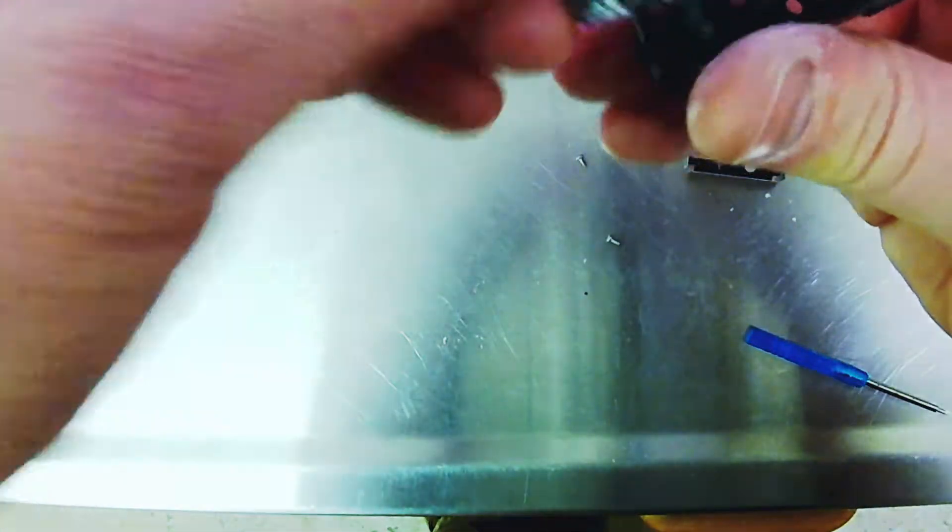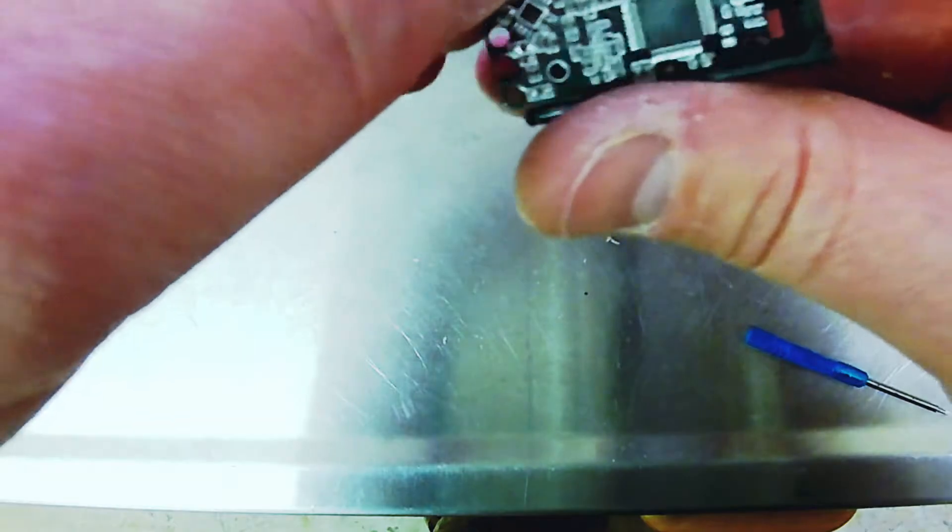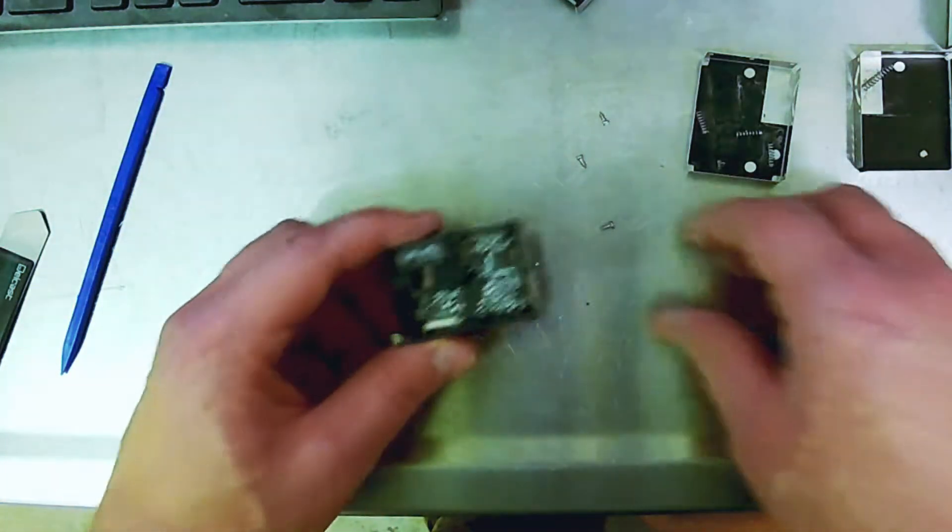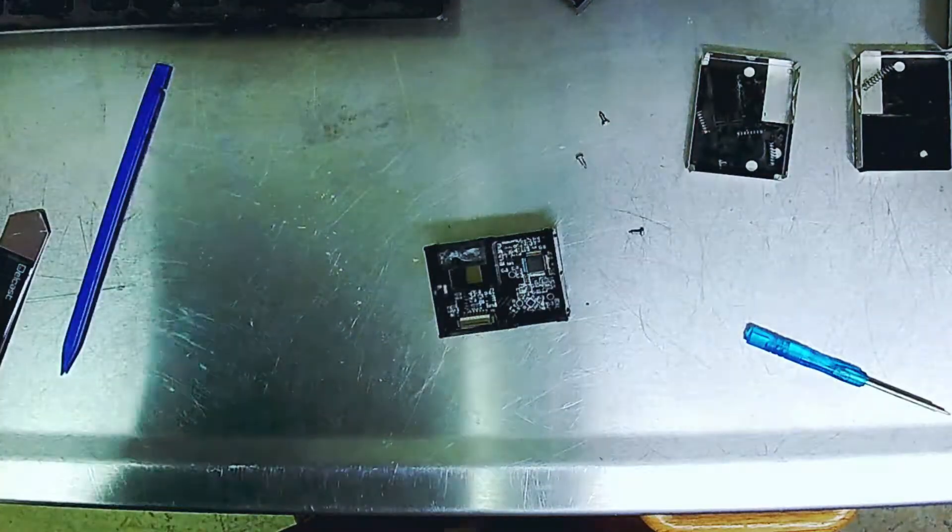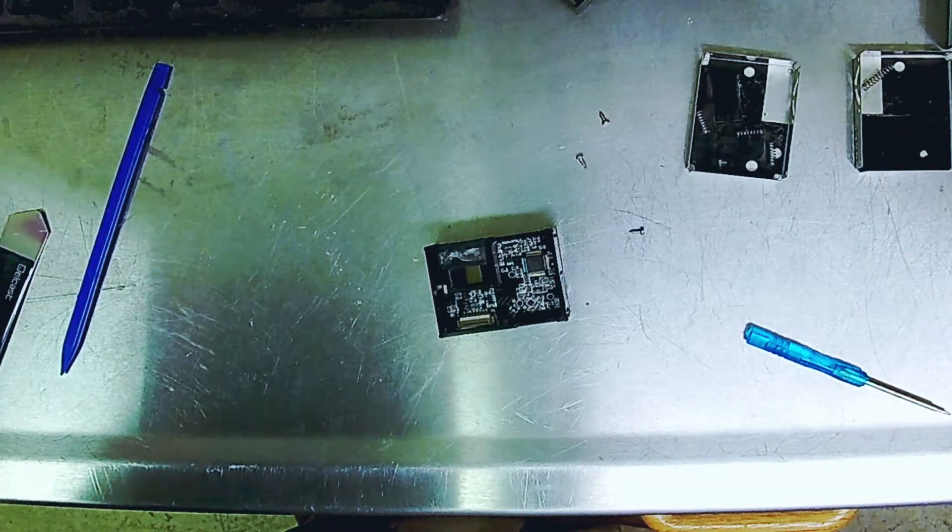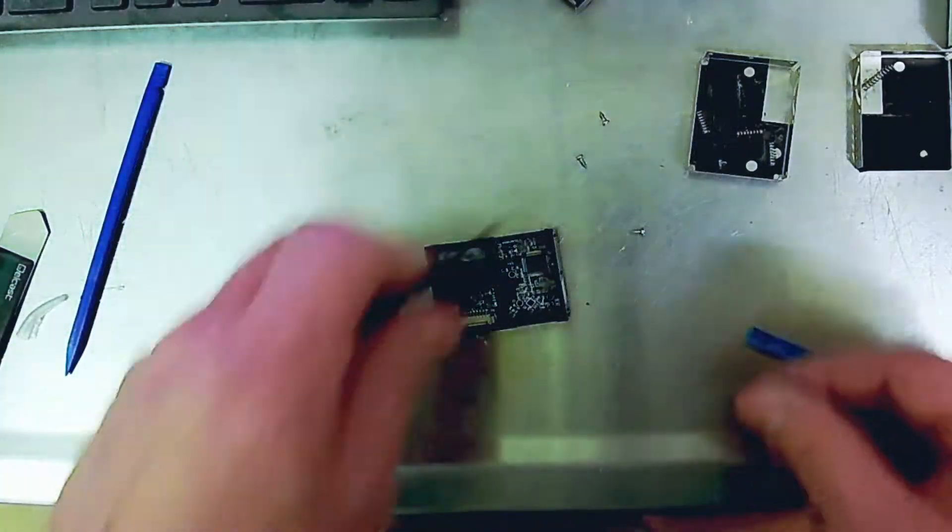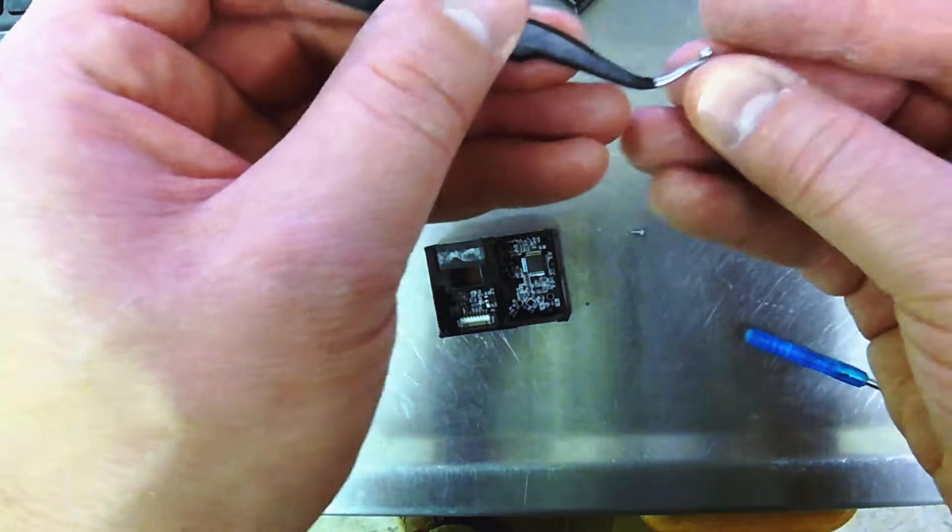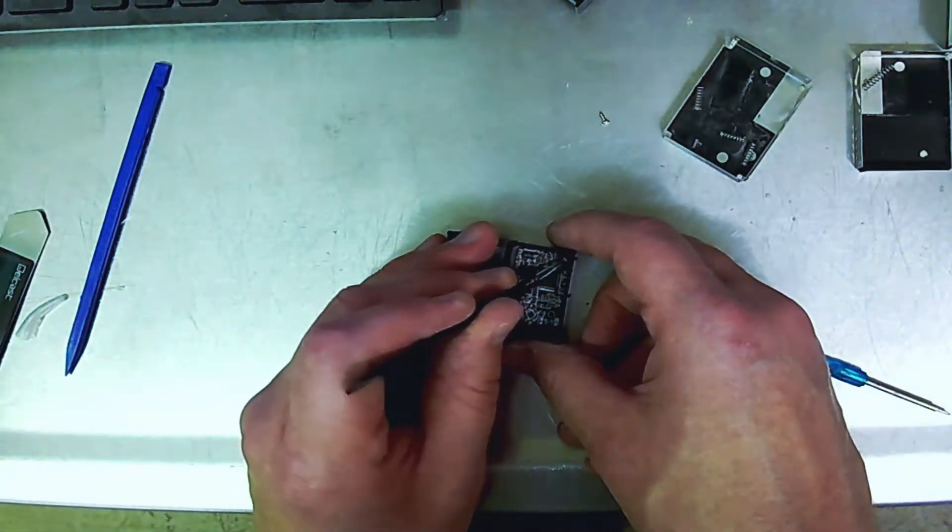Once that's done, just flip it over and put it back. And then we're going to reassemble it. My screwdriver is not magnetic, so I'm going to use tweezers to put these screws back in the corners where they belong.